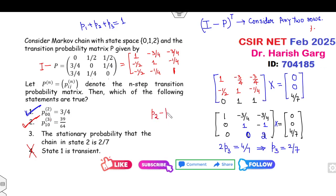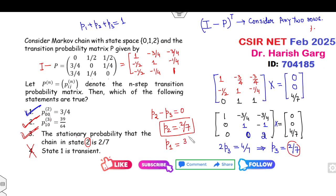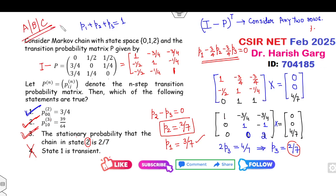From the second row: π2 − π3 = 0, so π2 is also 2/7. The stationary probability of state 2 is 2/7. For state 1: since π1 + π2 + π3 = 1, and π2 = π3 = 2/7, we get π1 = 3/7. You can verify this from the first row equation: π1 − 3/4·π2 − 3/4·π3 = 0, which also gives π1 = 3/7. So the correct answers are options A, B, and C.